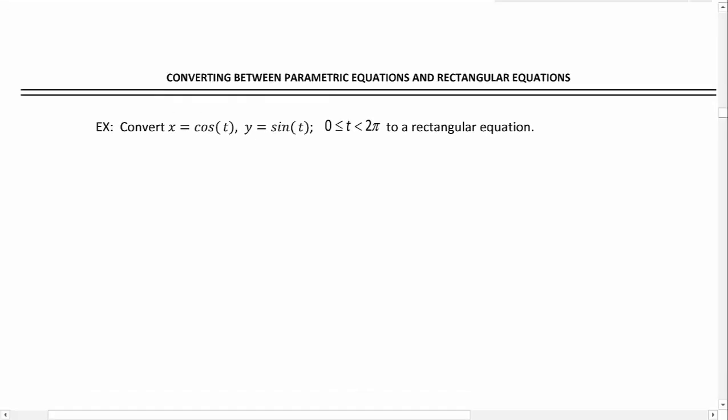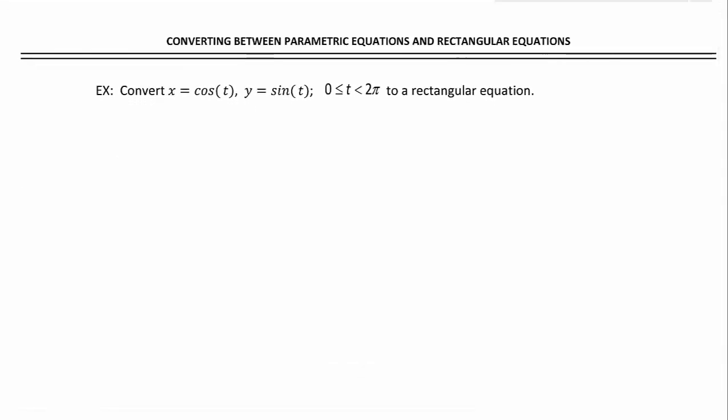Let's try one that's a little bit tougher. Here, our parametric equations are defined in terms of trig functions. We want to convert x equals cosine of t, y equals sine of t, where t is in between 0 and 2 pi, to rectangular equations.